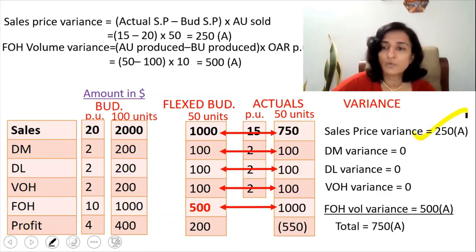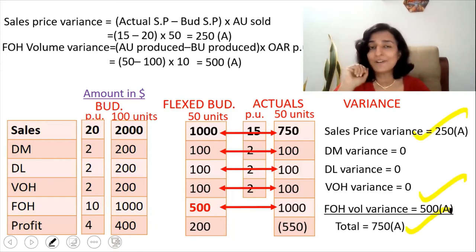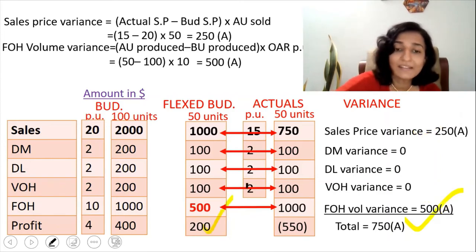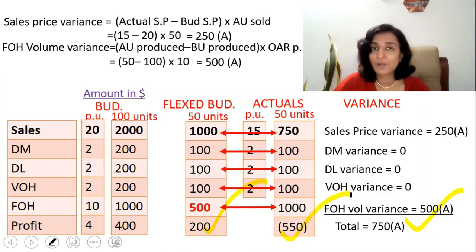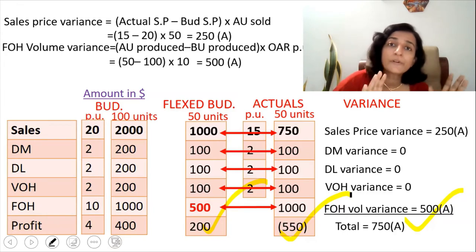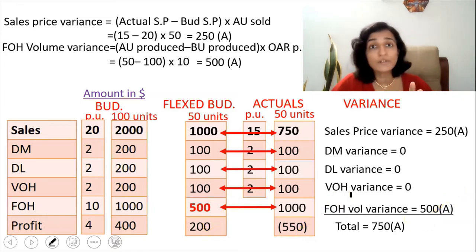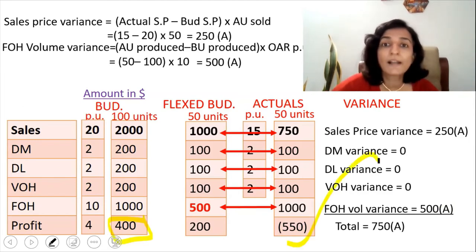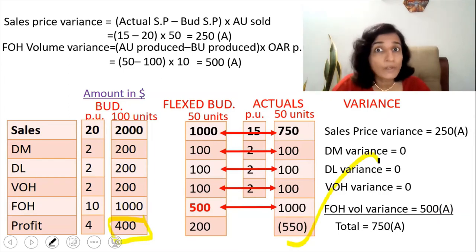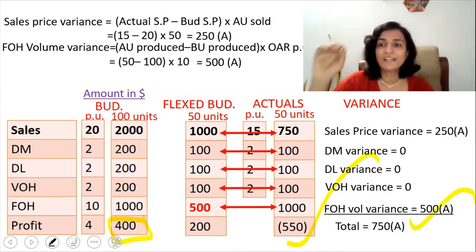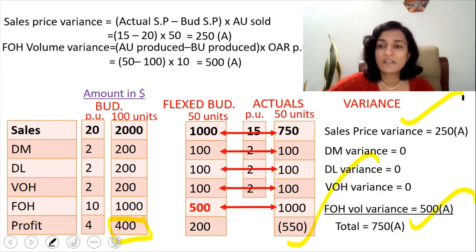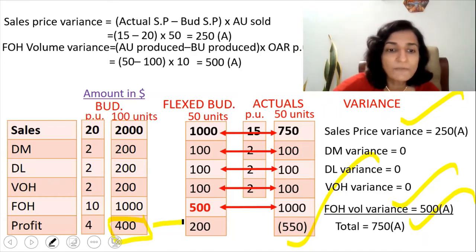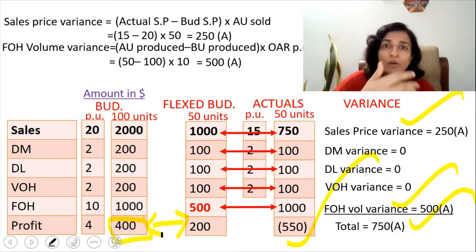The total of all these variances is $250 + $500 = $750 adverse. This $750 adverse is the difference between the flexed budget and the actual. But management will see that the budget for the year was $400 profit and the actual is a $550 loss — so they will ask what went wrong. If you tell them $750 adverse due to sales price variance and fixed overhead volume variance, they will still ask about the remaining difference of $200.